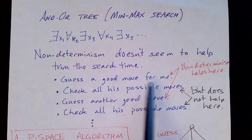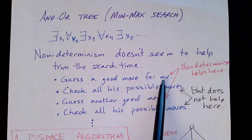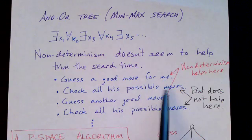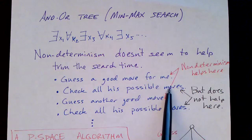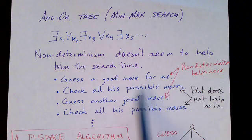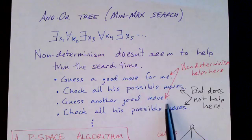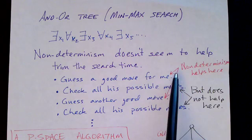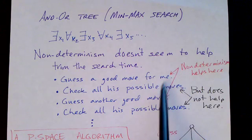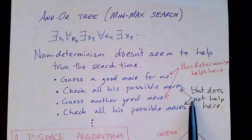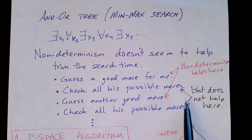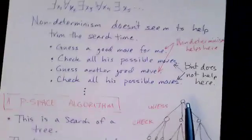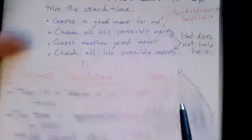So the idea is you guess a good move for me, but then you have to check all of your opponent's possible moves. And then to check those, you have to guess another good move for me and then check all possible counter moves. So non-determinism may help in the guessing part, but the checking all possible moves and counter moves—the non-determinism doesn't really help in that part of the problem.